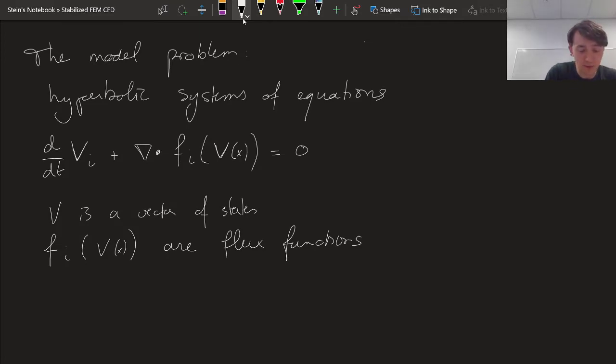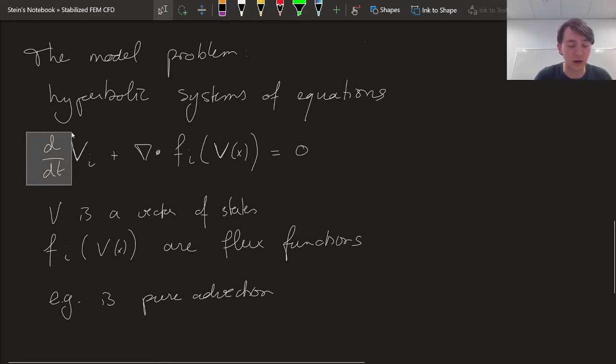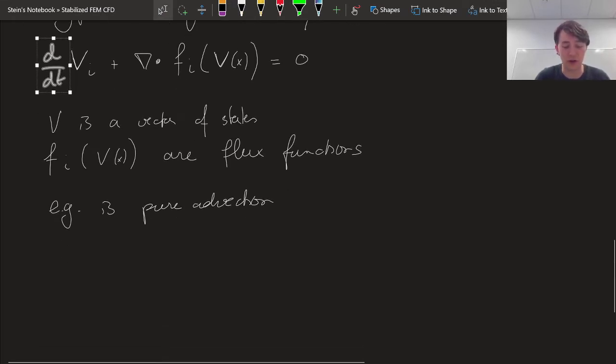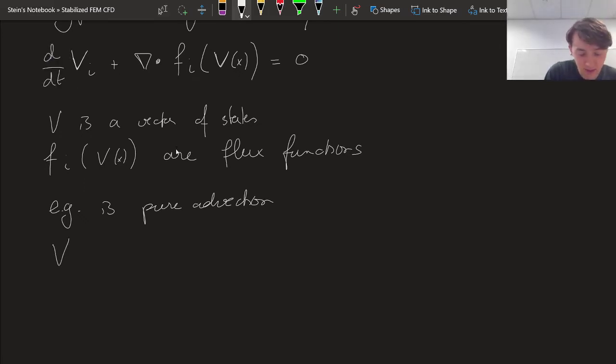One example is pure advection. We've talked about pure advection before, although we didn't really talk about it in a transient, time-dependent way. We talked about it purely in the spatial domain. Pure advection would follow from the choice of v_i is simply phi,